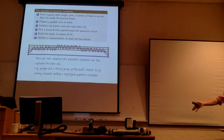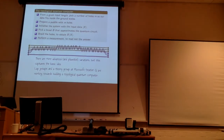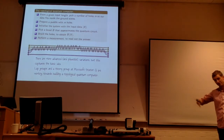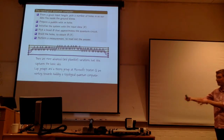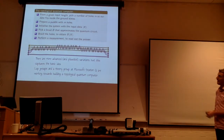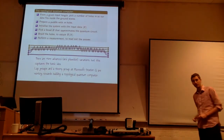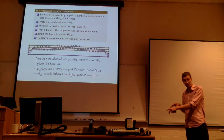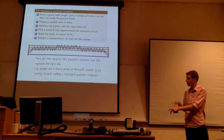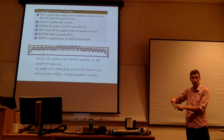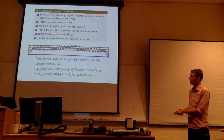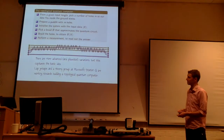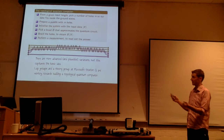So for every way of braiding the holes around each other, we get some transformation of the quantum mechanical states that only depends on the topology of this braiding, not the details of how our quantum engineers make it happen. This setup — for each configuration of holes we have a vector space of states, and for each braiding we get a unitary matrix describing how these vector spaces transform — is called a two-dimensional topological quantum field theory, or TQFT.